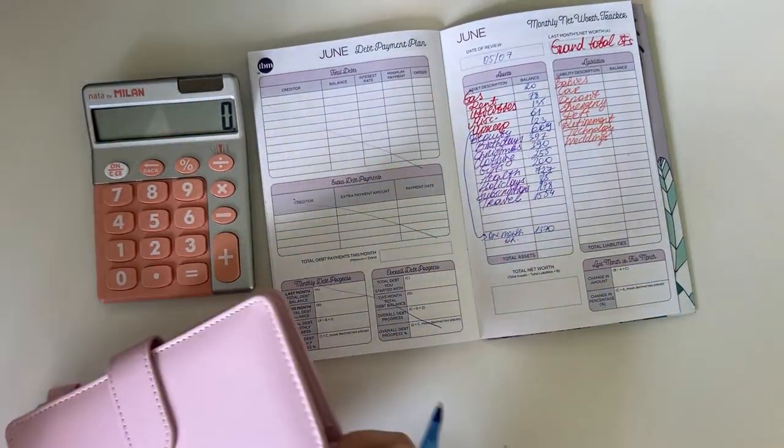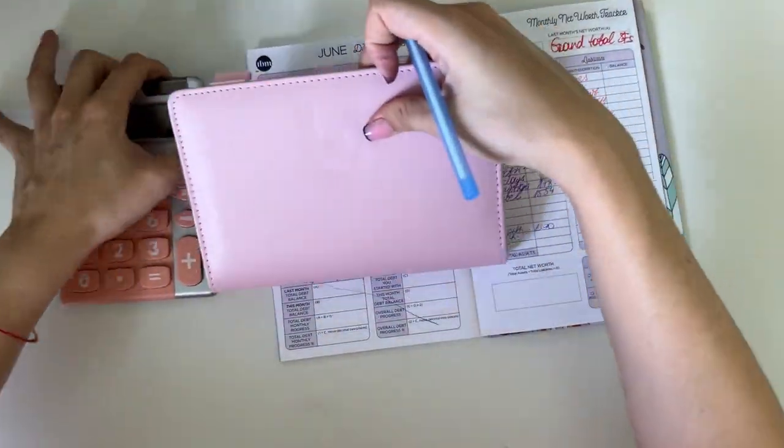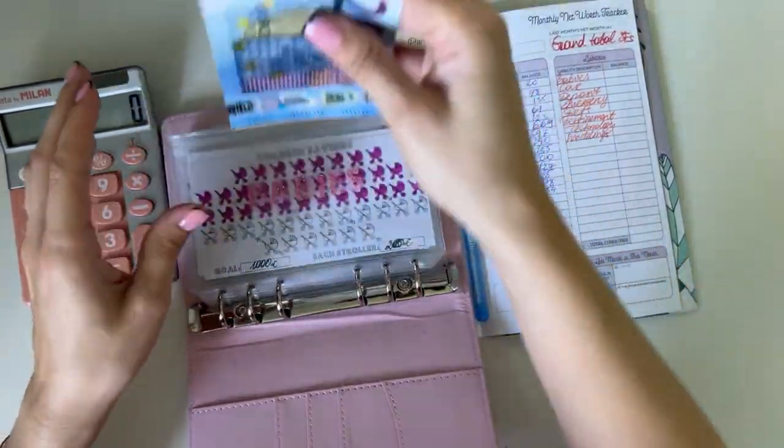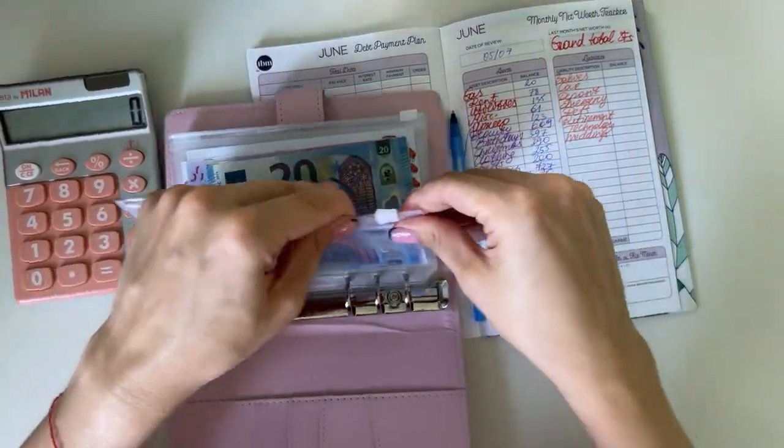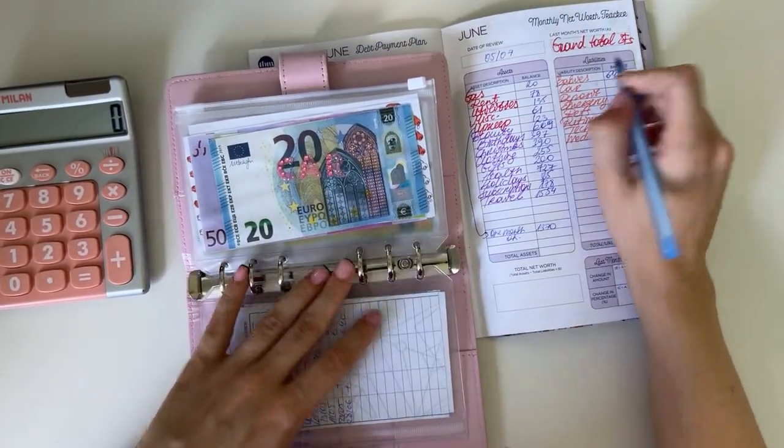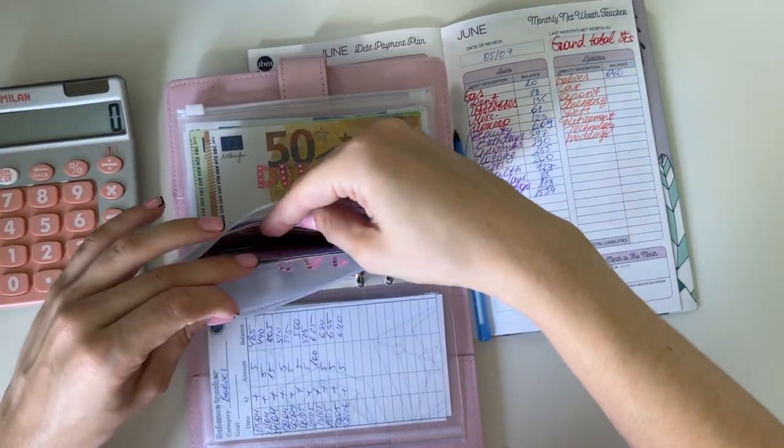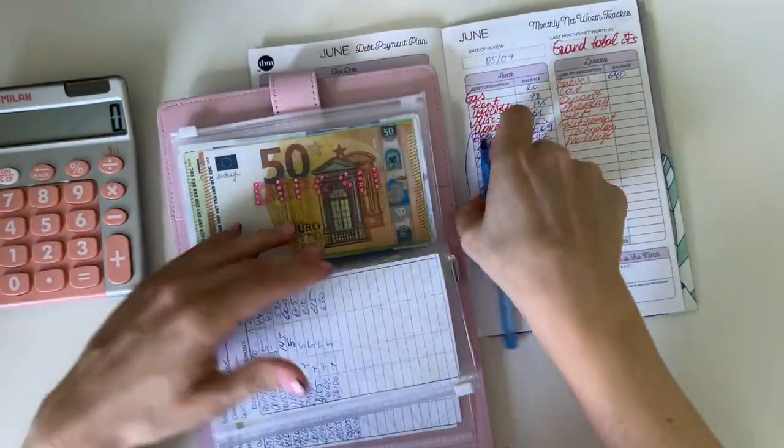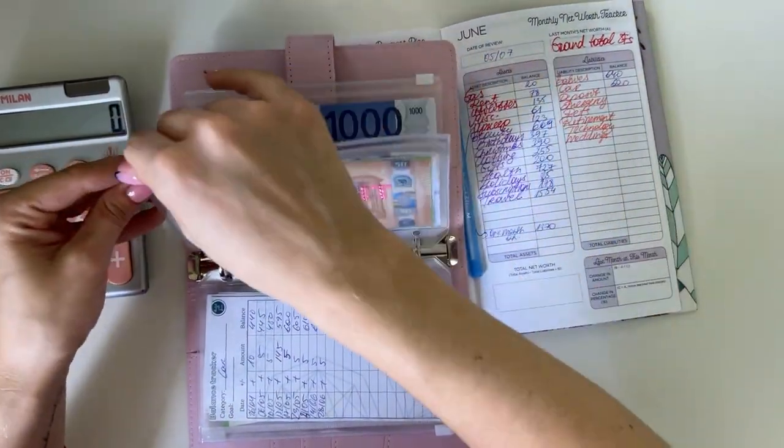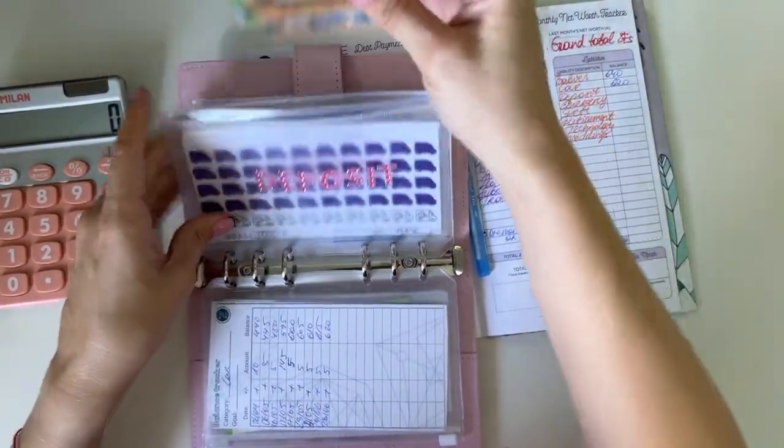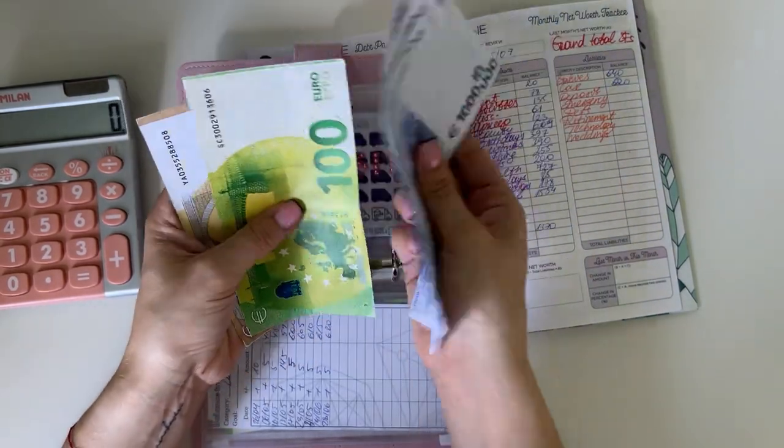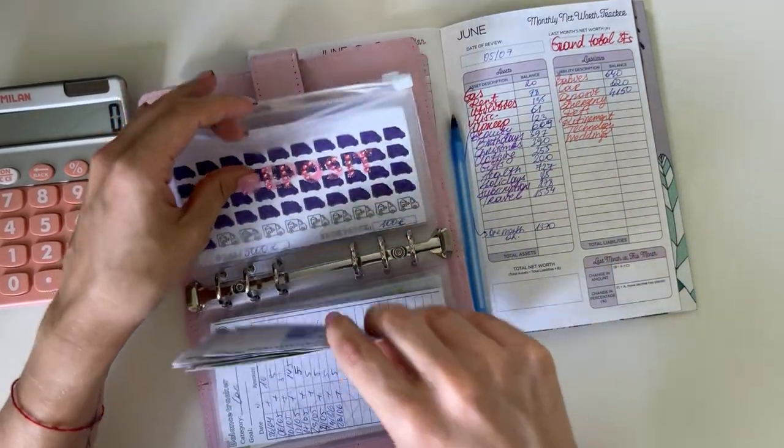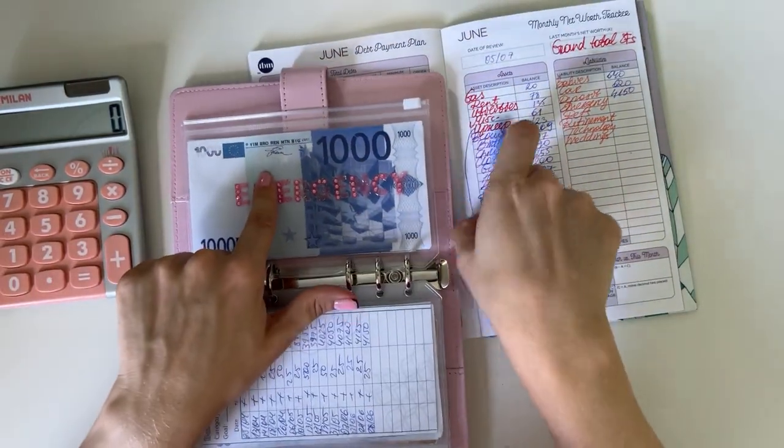Now we can move on to long-term sinking funds, starting with the pink binder. Babies is first and we have 640 in babies. Car has 620. Deposit has 1,000, 2,000, 3,000, 4,000, 150, so 4,150 in deposit. And then emergency has 3,000.